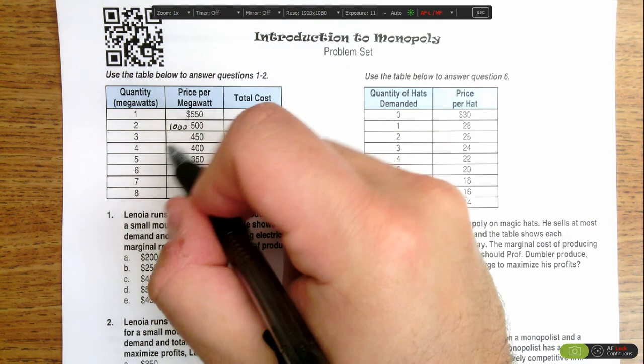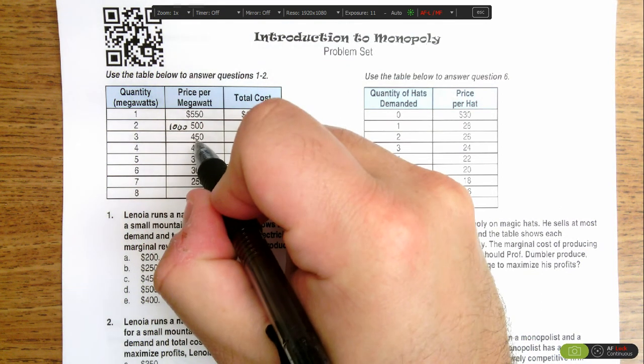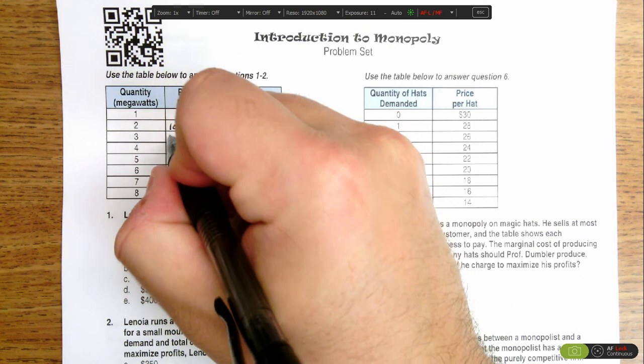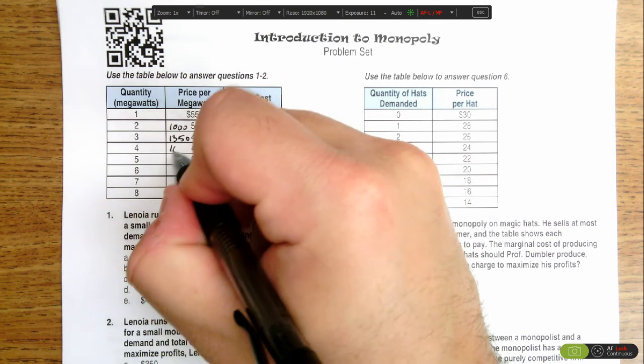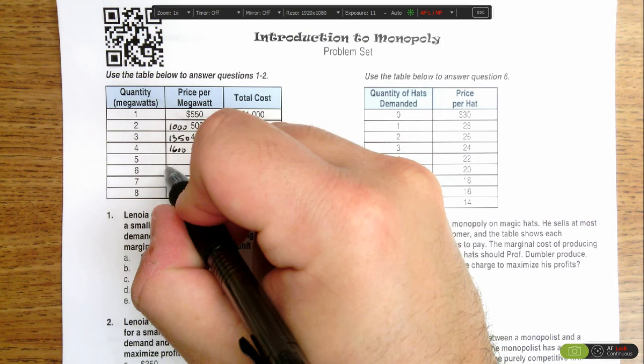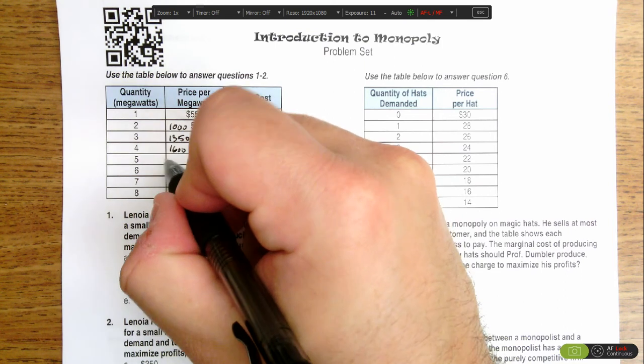If they sell three, then it's $450 per megawatt, and that gets them $1,350. Four is going to be $1,600. Five is going to be $1,750.